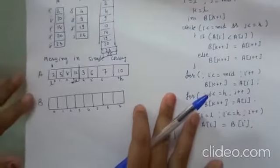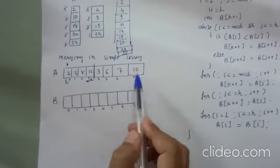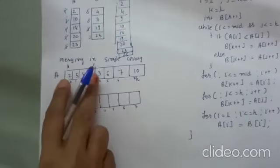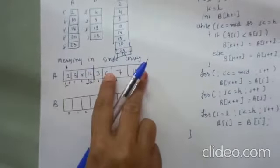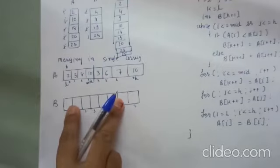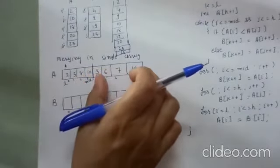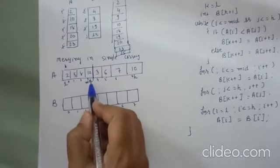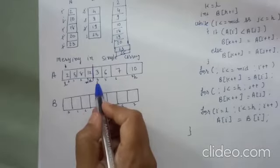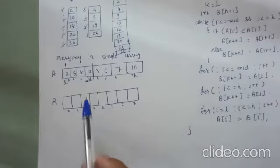Now let us discuss how to perform merging in a single array. Here we have a midpoint, and I want to merge the two sub-arrays. I will copy the result into one additional array B, and after performing merging, I will copy all those elements back into array A. My first list is from L to mid and my second list is from mid plus 1 to high. This procedure is the same but performed on a single array.